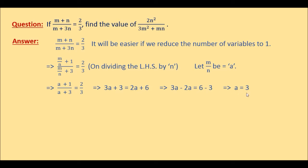3a minus 2a equals a, and 6 minus 3 equals 3. Therefore the value of a is equal to 3. We have now got a numerical value of this variable a, that is m over n. We will be putting this m over n at the last moment if we need it. But as of now, we have found the numerical value of this variable a, which is equal to 3.